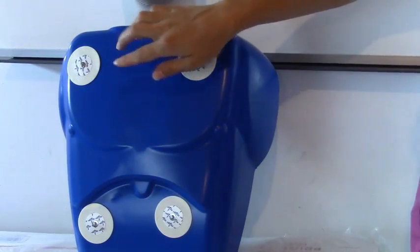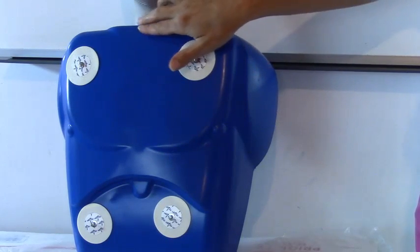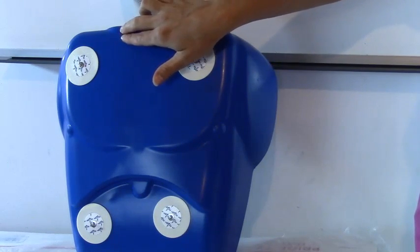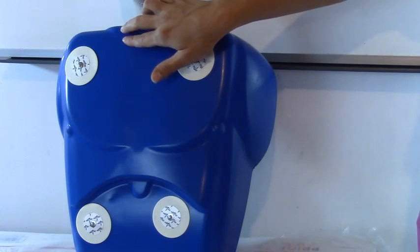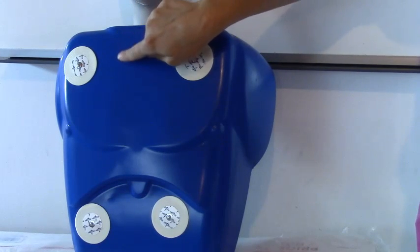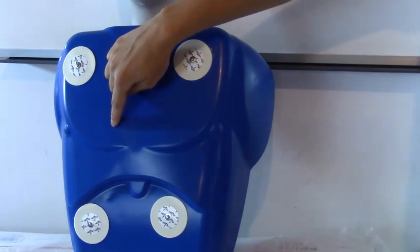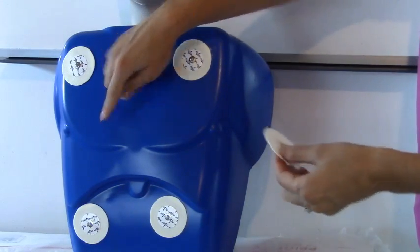Now let's do our chest leads. First what we're going to start with is V1. You're going to find the sternum which is in the middle then you're going to count the ribs and we're going to go to the fourth intercostal space right of the sternum. So you're going to count the ribs. So about right here would be our fourth intercostal space and that is going to be V1.